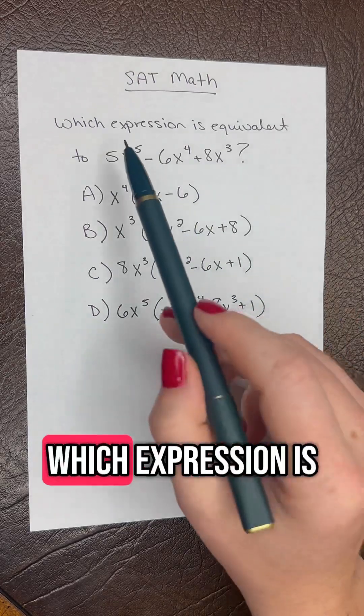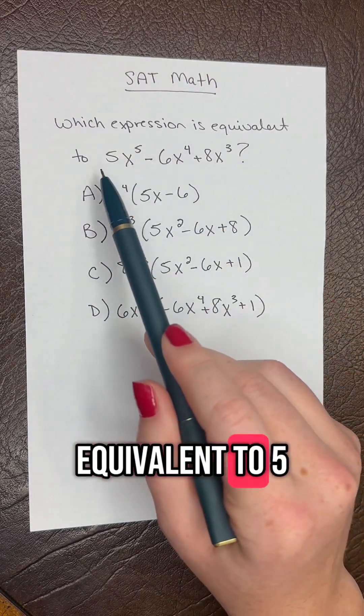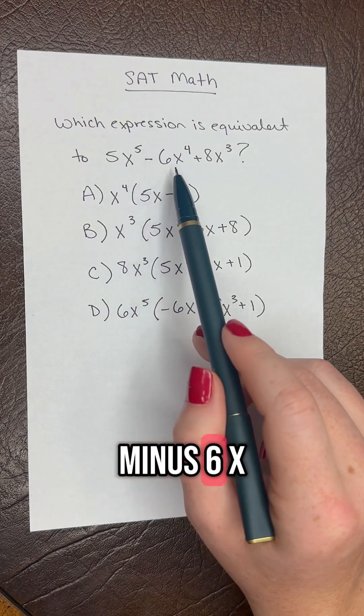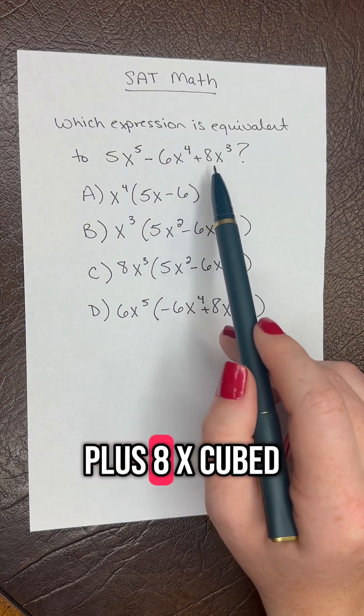SAT math question of the day. Which expression is equivalent to 5x to the fifth minus 6x to the fourth plus 8x cubed?